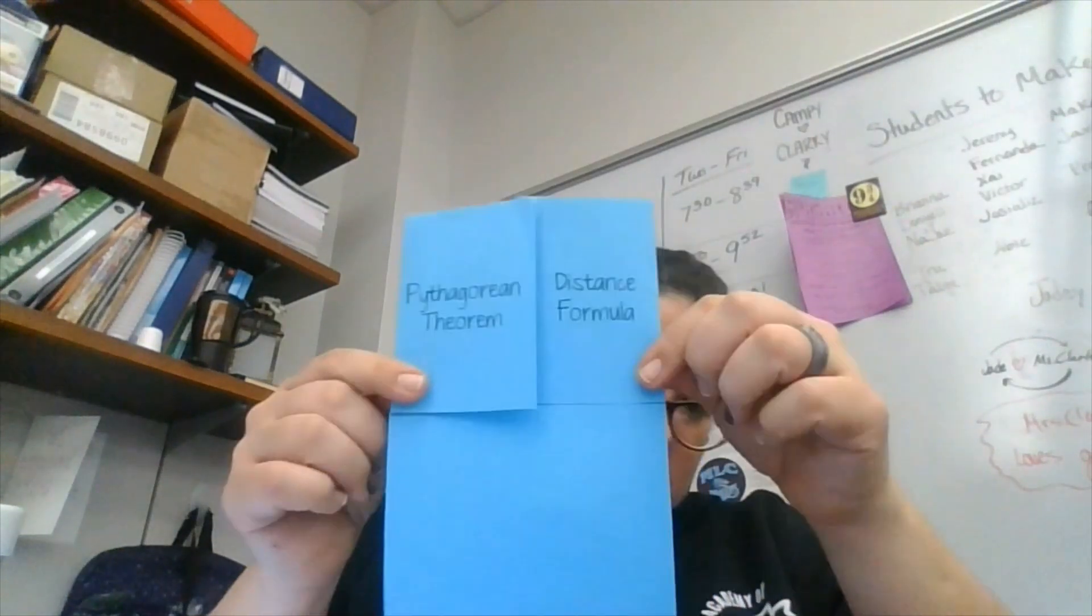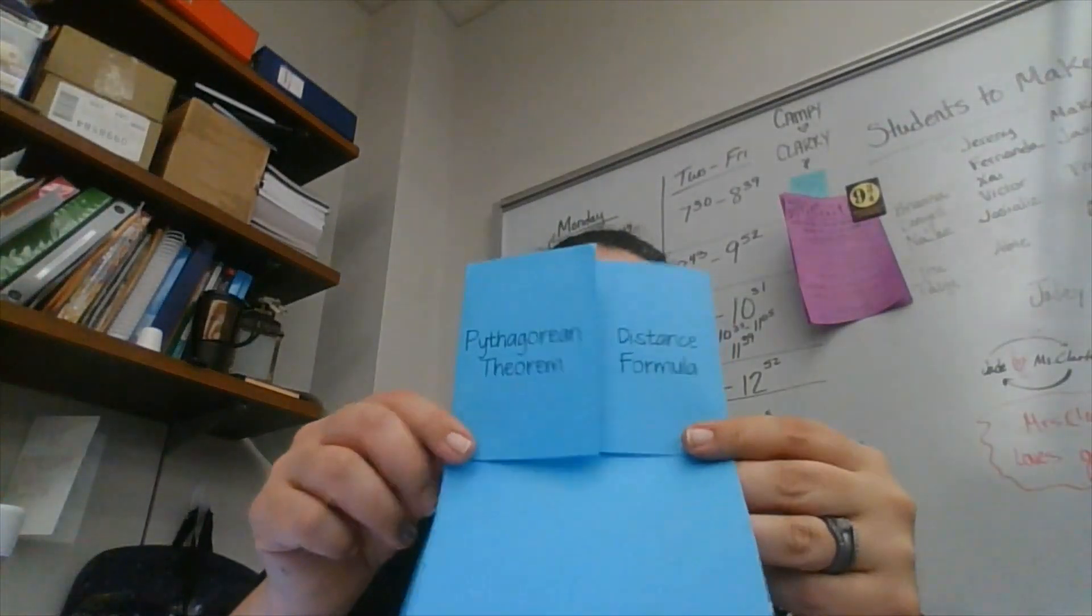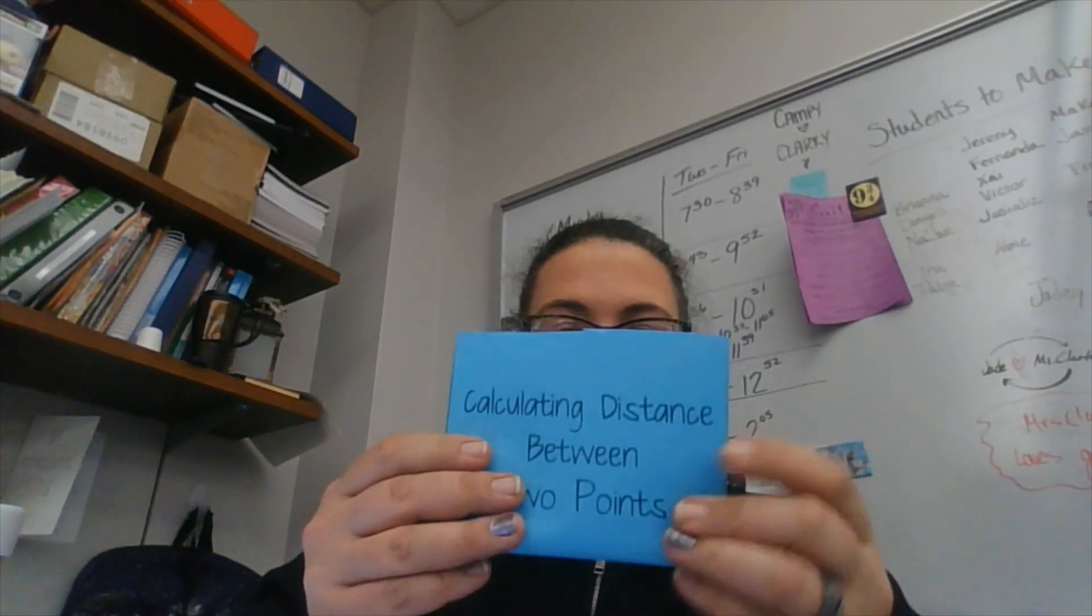All right, so you have these two little doors that are overlapping a little bit. So one side is going to be where we do our Pythagorean theorem work, and this side is going to be where we do our distance formula work. So I'm going to make this video into two parts. For now, we're just going to glue this in, and we'll get started on the first half.